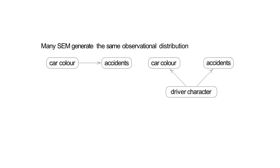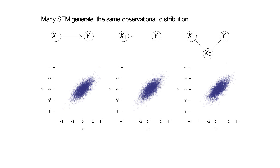For example, you could have an SEM where car colour is the causal parent of accidents, so changing car colour changes the accident rate. Or it might be driver character — if you like fast cars you tend to pick a red car, so red cars on average have faster drivers in them. The observational distribution between car colour and accidents would be exactly the same. And in a continuous case you can have three SEMs where x1 and y all generate exactly the same observational distribution, whether x1 is a parent of y, y is a parent of x1, or a third variable x2 is a parent of both.